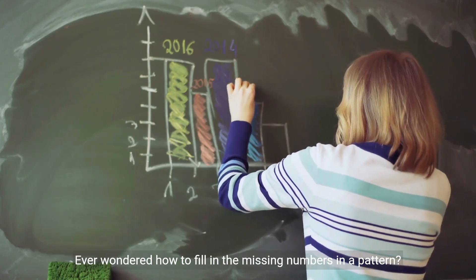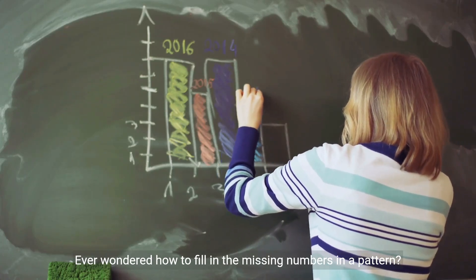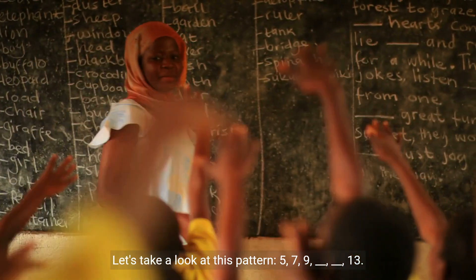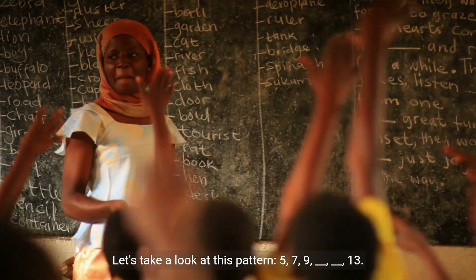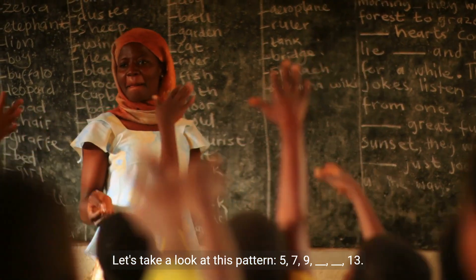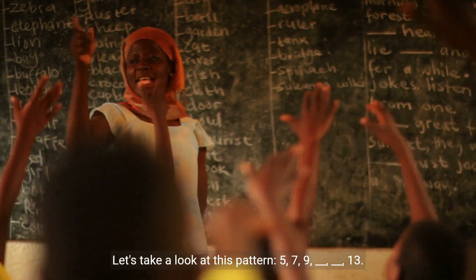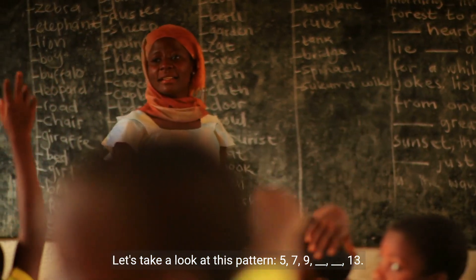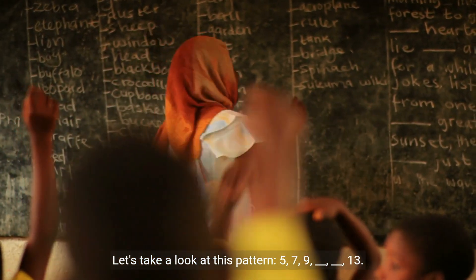Ever wondered how to fill in the missing numbers in a pattern? Let's take a look at this pattern: 5, 7, 9, _, _, _, 13.